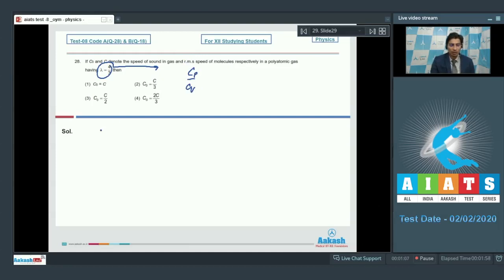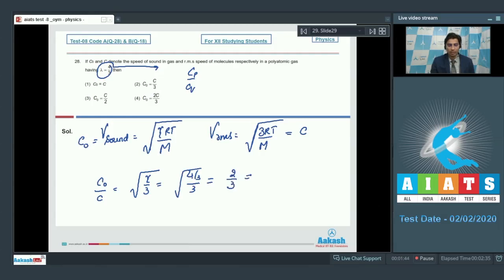The speed of sound will be equal to under root gamma RT by m and the RMS speed will be equal to under root of 3 RT by m. The speed of sound is given as C0 and the RMS speed has been given as C. We can see that C0 by C is equal to under root gamma by 3 which will be equal to 4 by 3 by 3 under root. This will be equal to 2 by 3.